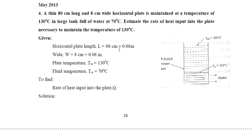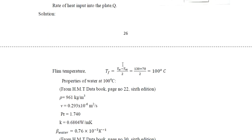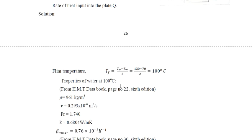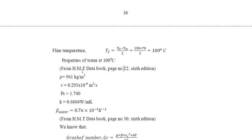The horizontal plate has length 0.8 m and width 8 cm = 0.08 m. The plate temperature T_wall is 130°C and fluid temperature T_infinity is 70°C. We need to find the rate of heat input q. The film temperature is the average of wall and fluid temperatures: (130 + 70) / 2 = 100°C.